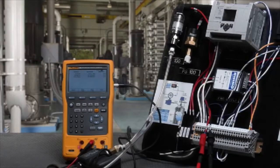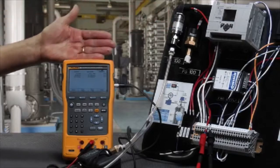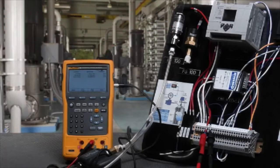That's how you verify the performance of a pressure transmitter using the Fluke 754 documenting process calibrator.